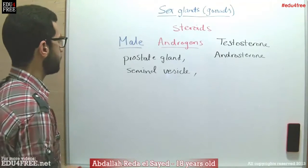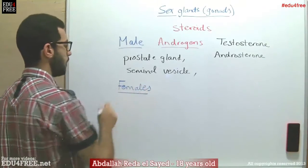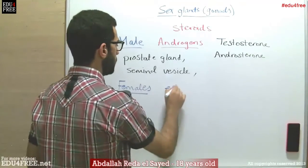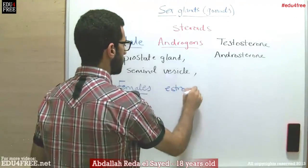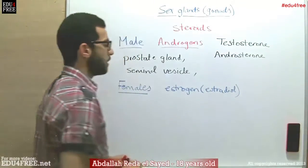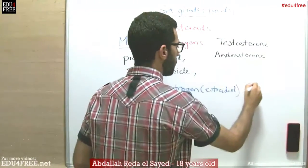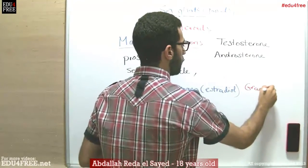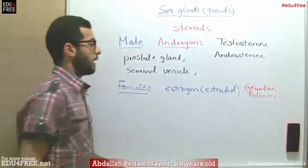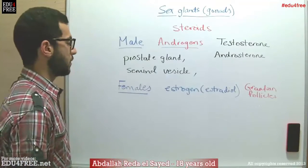For the females, the hormones are produced from the ovaries and we have three main hormones. We have estrogen, or estradiol, and this is produced from the Graafian follicle in the ovaries. The function of this hormone is the appearance of female secondary sexual characters.